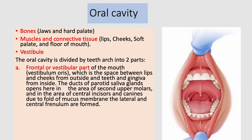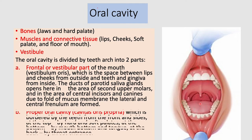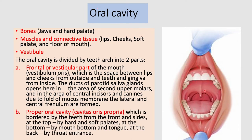The oral cavity is divided by the arch of teeth into two parts. One is the frontal or vestibular part, also called vestibulum oris — a space between the lips outside and the cheeks, teeth, and gingiva from inside. The ducts of the parotid salivary glands open in the area of the second upper molar tooth, and in the area of the central incisors and canines we can see the lateral and central frenulum due to the fold of the mucous membrane.